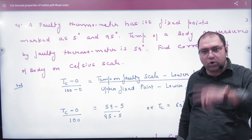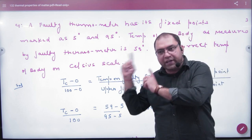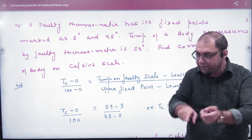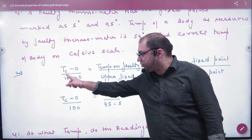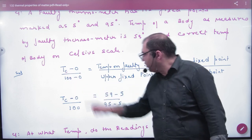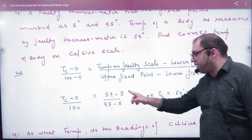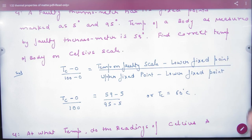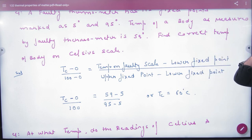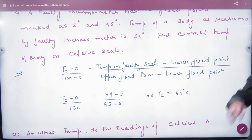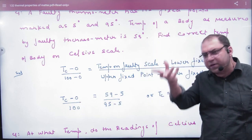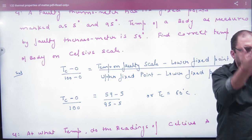Our standard Celsius scale works from 0 to 100. If the faulty thermometer reads 59, we apply the formula: (C − 0) / (100 − 0) = (59 − 5) / (95 − 5), which gives C = 60°C. That is how the conversion works — one formula handles everything, no matter what thermometer is given.